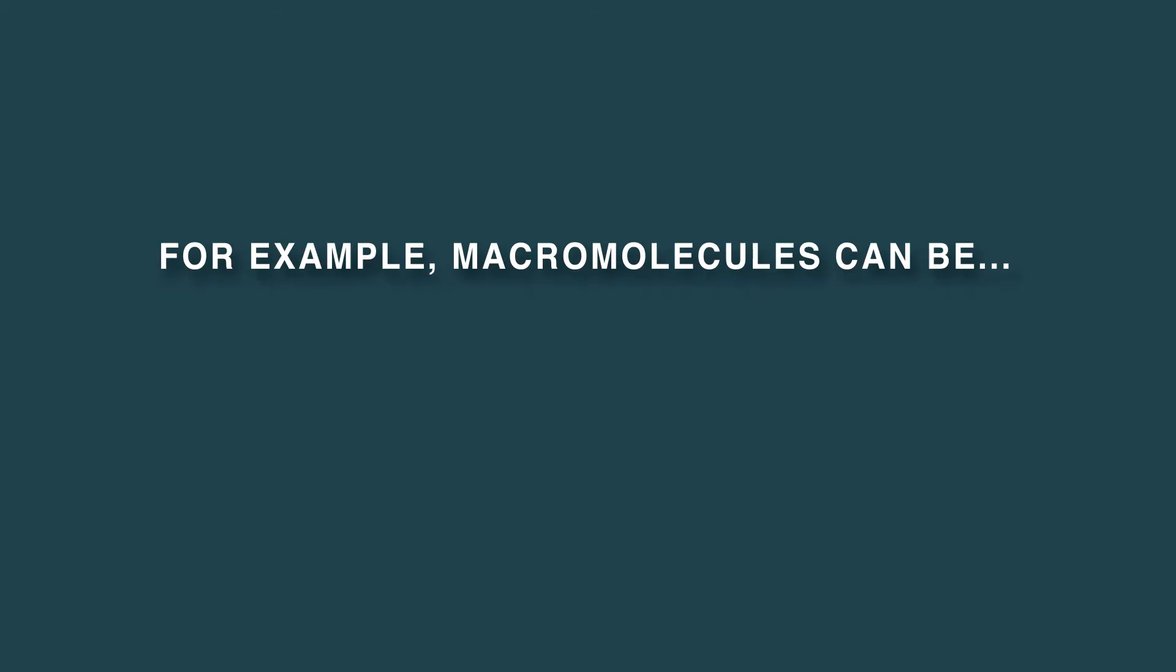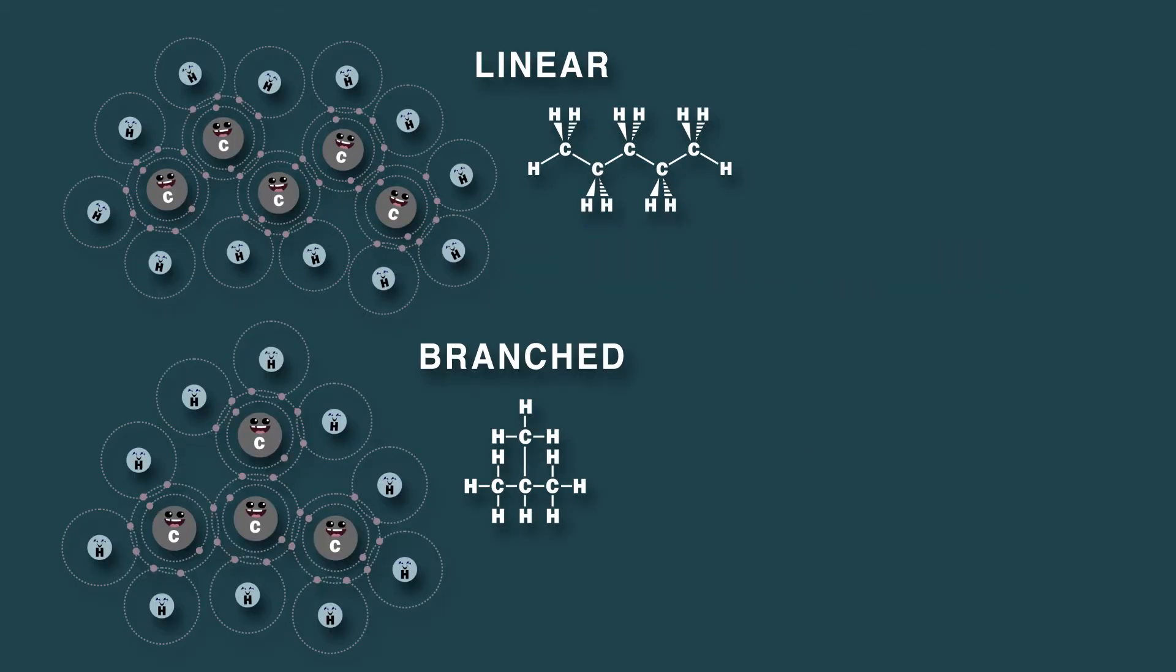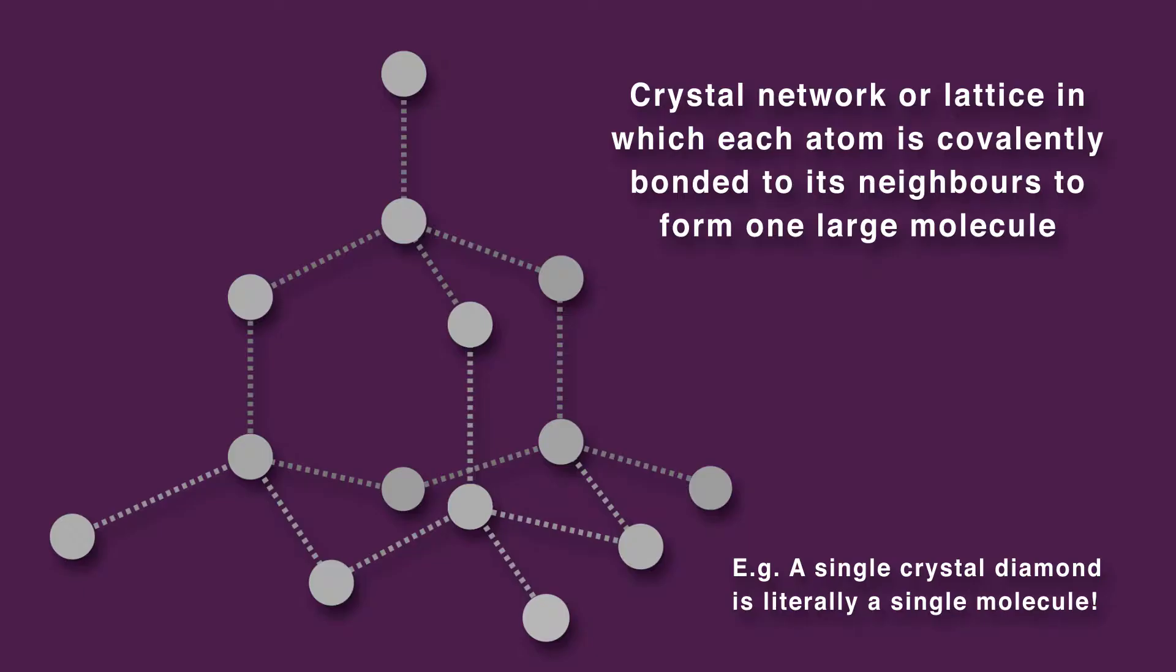For example, macromolecules can be linear, branched, or cross-linked. You can also get a crystal network or lattice in which each atom is covalently bonded to its neighbors to form one large molecule.